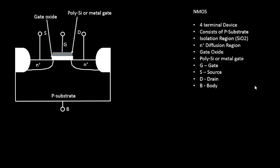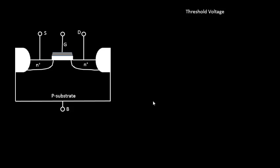Let's continue our discussion with MOSFET transistors. In the last video we saw the basic structure of MOSFET — the gate, source, drain, and body terminal, the p-type substrate, diffusion regions, and so on. In this video we will be talking about the electrical characteristics of the MOSFET. Let's begin with one of the very important electrical properties: the threshold voltage. By definition, threshold voltage is the voltage at which your device turns on.